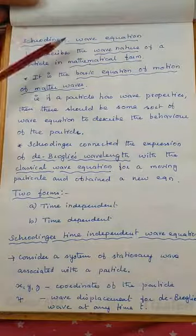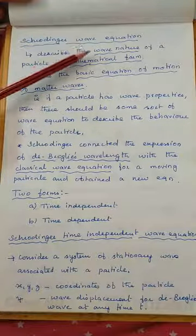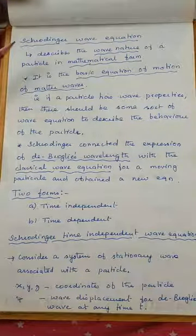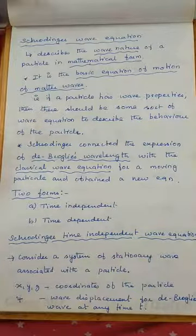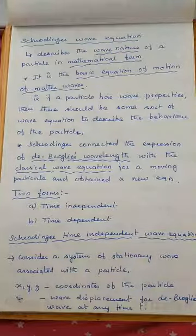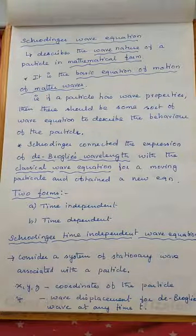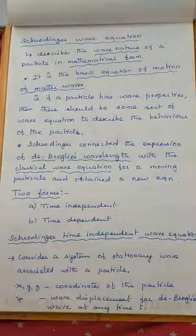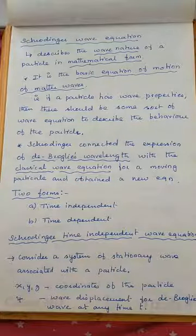Generally, the wave equation is the equation which gives the wave nature of a particle in mathematical form. That means this is a basic equation of motion of matter waves. For example, if any particle is moving in a straight line, it has to satisfy the equation y = mx + c. If it is following the path of a hyperbola, it has to satisfy some other equation. Just like that, if a particle has wave properties, there should be some sort of wave equation to describe its behavior. That mathematical equation is derived by a scientist known as Schrödinger, and it is called Schrödinger's wave equation.